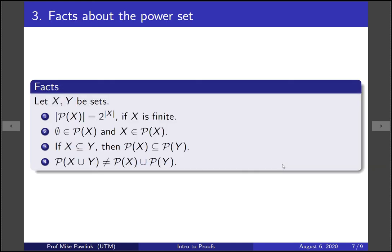Let's see these properties written down. If x is a finite set, then the cardinality of the power set of x equals 2 raised to the power of the cardinality of x — a power set always has a power-of-two number of elements. The empty set and the full set are always elements of the power set. If x is a subset of y, then the power set of x is a subset of the power set of y. Finally, the power set of a union is not equal to the union of the power sets in general — for most sets it is not equal. You should be able to prove all of these statements.